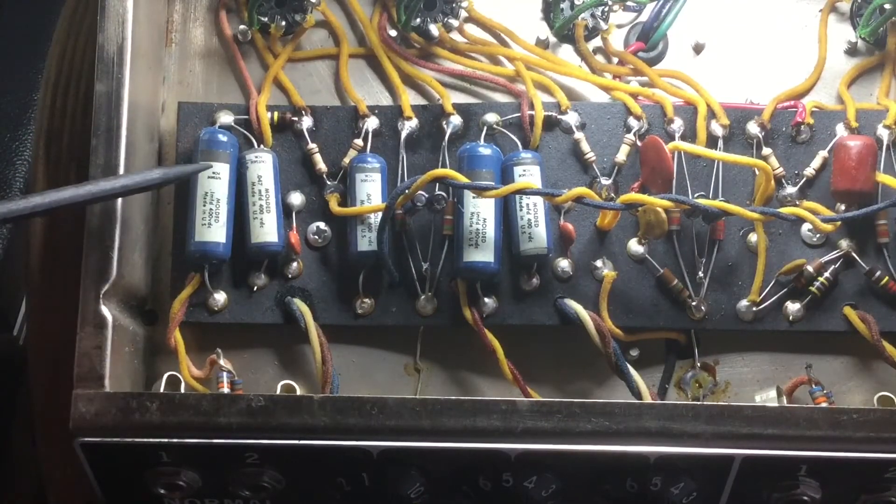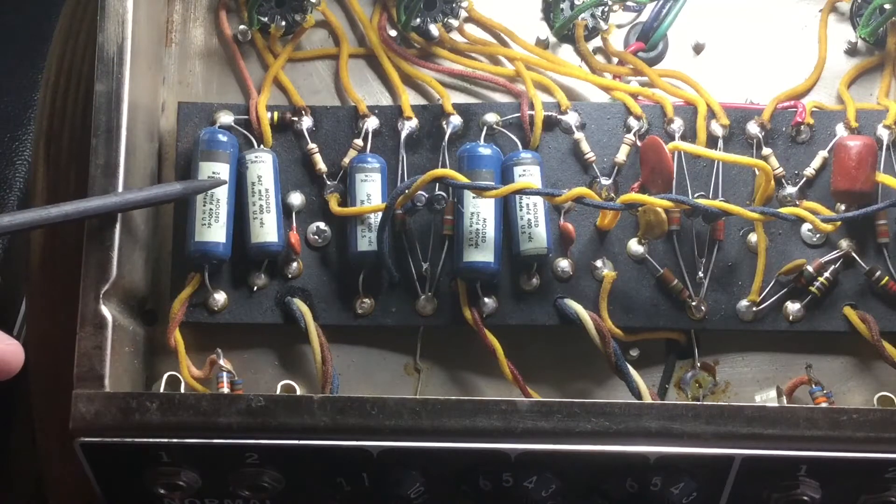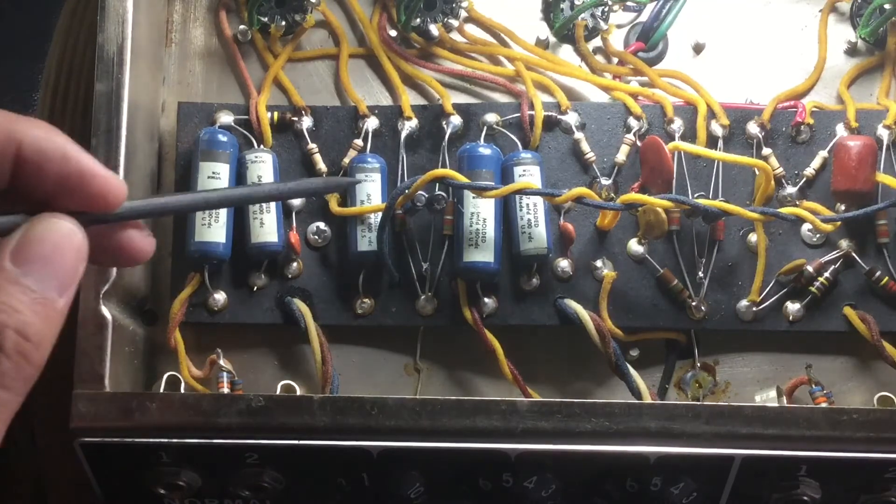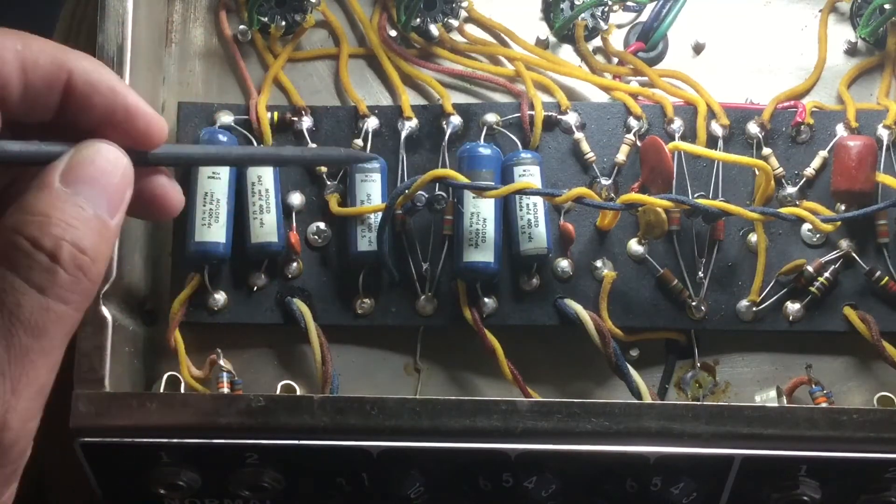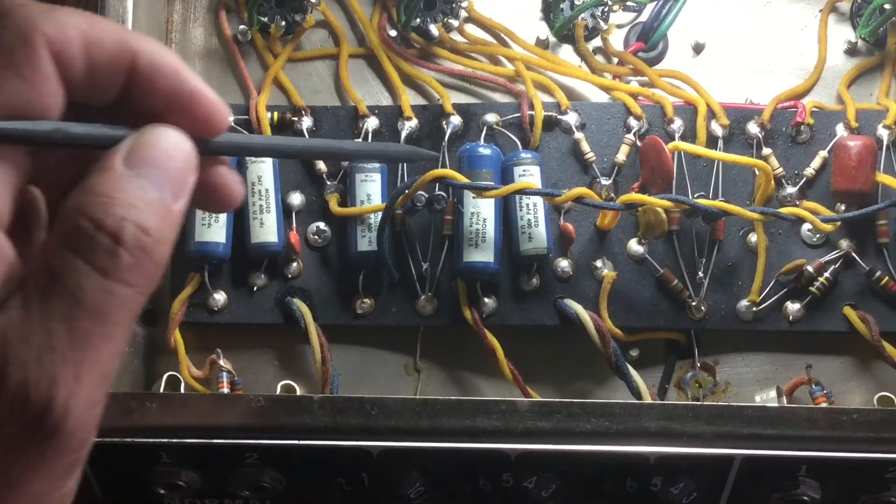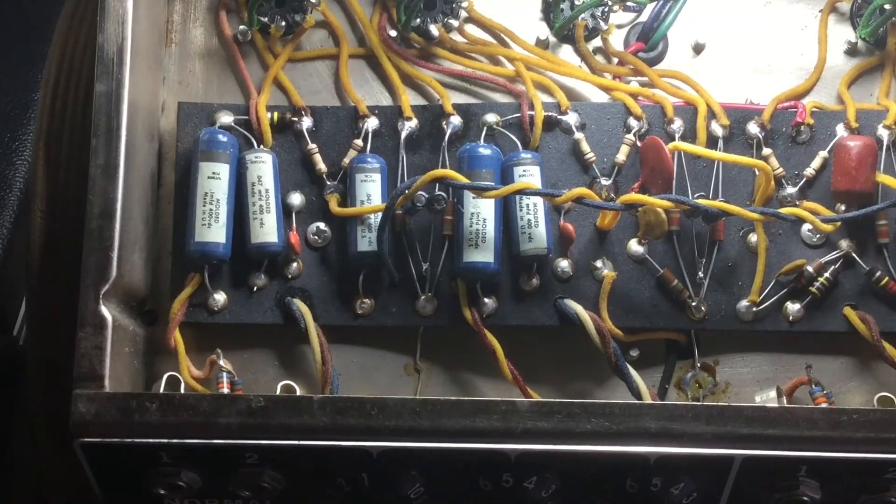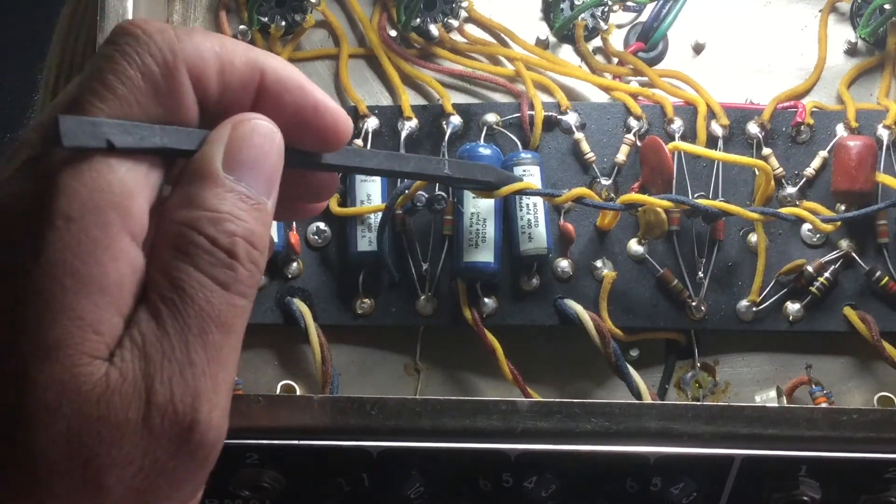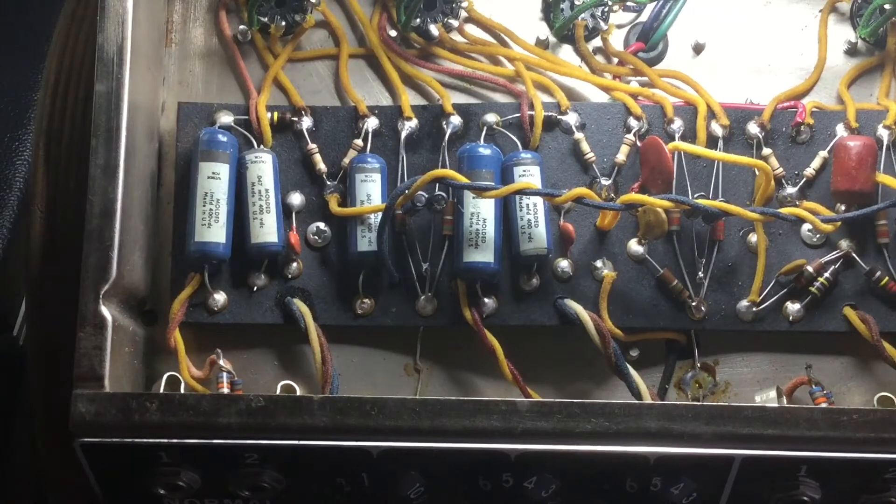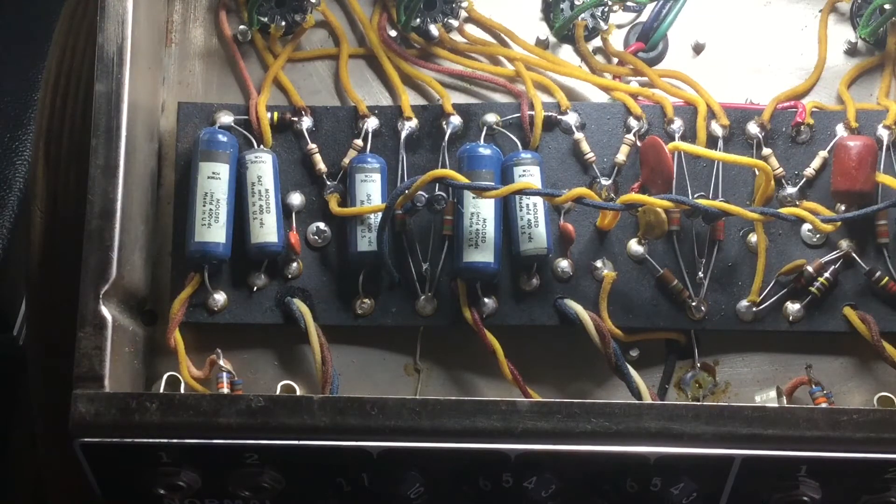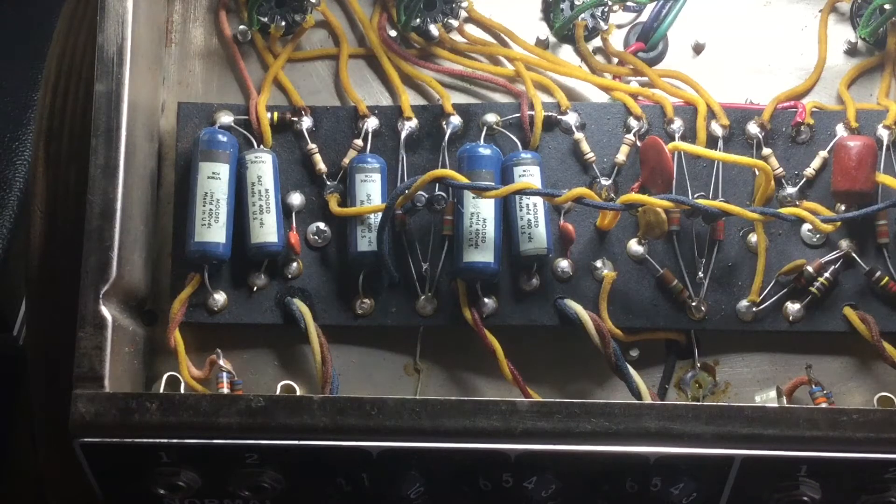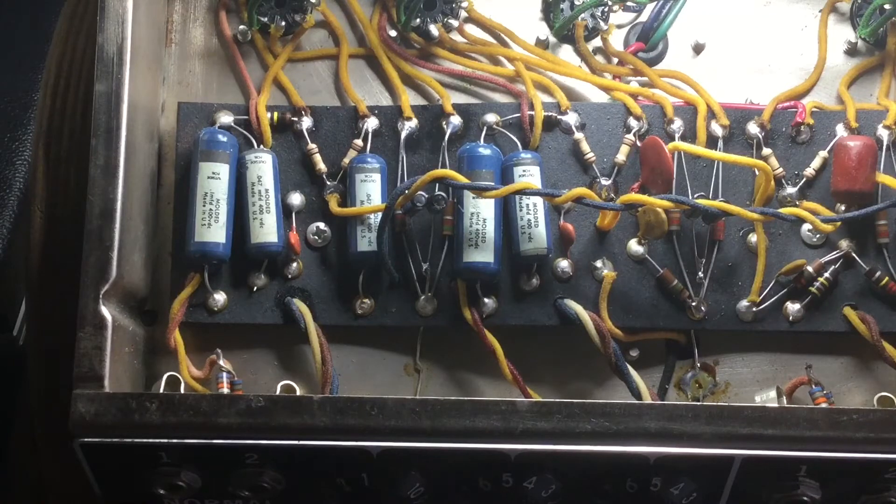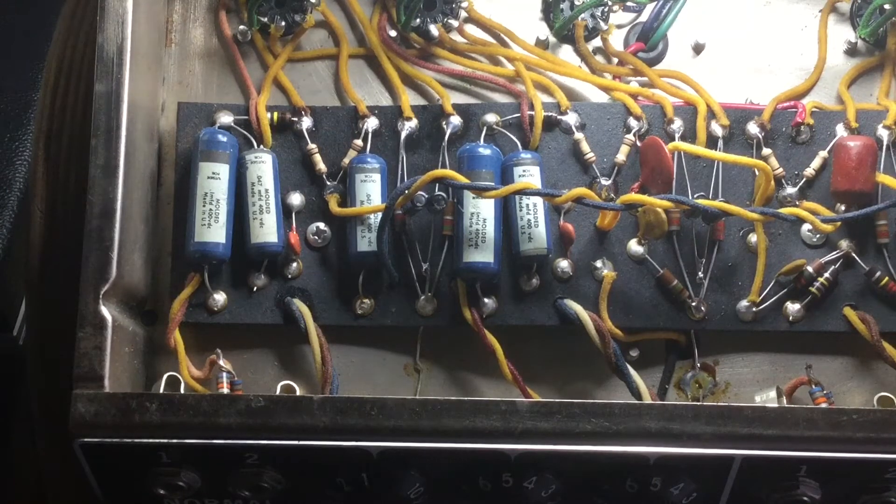And starting on the preamp side, we have these polyester original Fender capacitors. Collectors really love these types of capacitors and they have a high value. They're fine. This is part of the Fender sound. This is a vintage amplifier. And for those who don't know, the early deluxes, especially this one, the 1965 deluxe, is sought after by collectors.